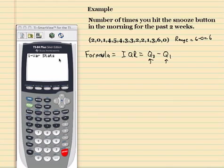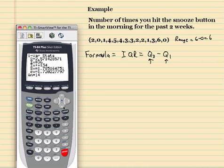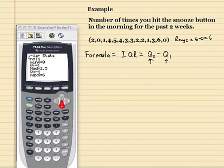And the way we do that is one variable statistics stack, go over to calc, hit enter. Our data is in list one, so I don't have to put a list two there. Hit enter. And I'm just going to scan down and look for Q1 and Q3. So our Q3 is 4. Our Q1 is 1. So our IQR is 3.